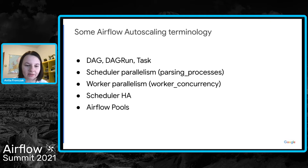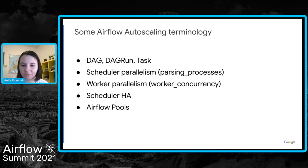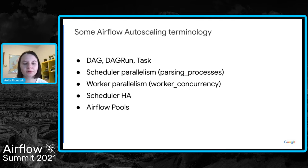Celery worker concurrency is the number of Celery processes per Airflow worker — each Celery executor picks up a task from a queue to process. There is also the core parallelism parameter, which defines the max number of task instances that should run simultaneously; it should equal worker concurrency times the number of workers. Finally, DAG concurrency is the number of task instances allowed to run concurrently by the scheduler.